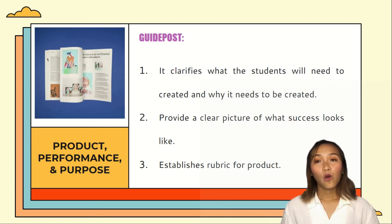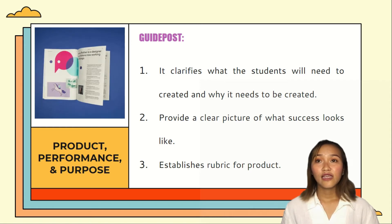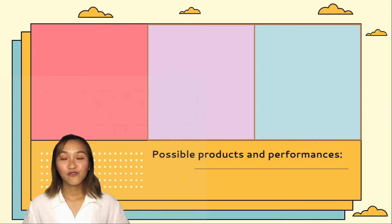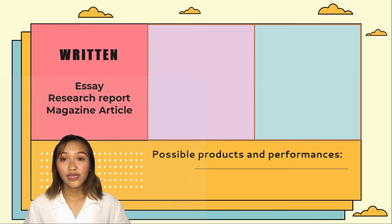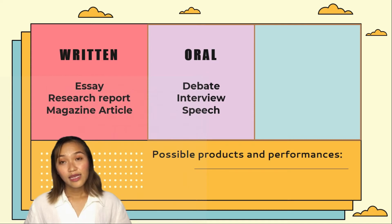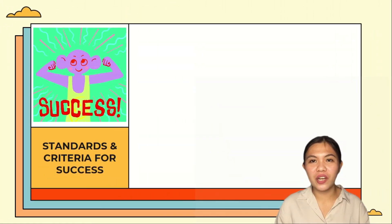The products provide various opportunities for students to demonstrate understanding depending on their learning style and abilities. Based on each learner or individual class, the educator can make appropriate instructional decisions for product development. Students' products and performances should be framed by an explicit purpose or goal and an identified audience. The possible products and performances are categorized into three classifications: written (such as essay, research report, or magazine article), oral (such as a debate, interview, or speech), and visual (such as a computer graphic, collage, or scrapbook).